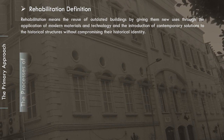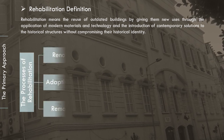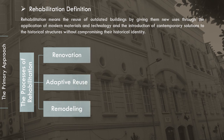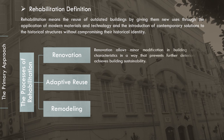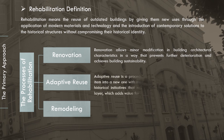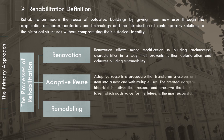The three processes of rehabilitation are renovation, adaptive reuse, and remodeling, in order of increasing intervention. Renovation allows minor modification in building architectural characteristics in a way that prevents further deterioration and achieves building sustainability. Adaptive reuse is a procedure that transforms a useless or ineffective building into a new one with multiple uses; the most successful adaptive reuse for historical initiatives respects and preserves the building's current layer, adding value for the future.